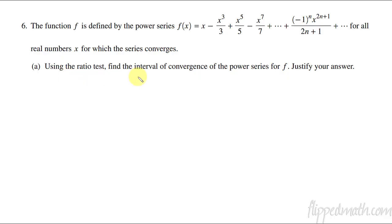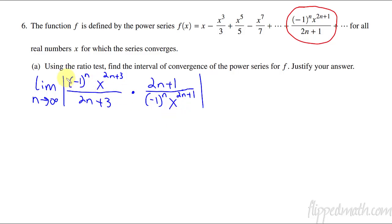So let's take a look at what we do here. We're going to use the ratio test and find the interval of convergence of the power series for f. So what we focus in on is this general term here. That general term gives us every single term. So what we're going to do is the ratio test, we're going to take the limit as n approaches infinity.